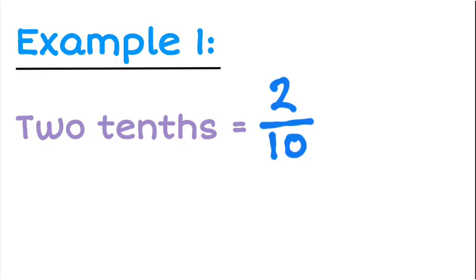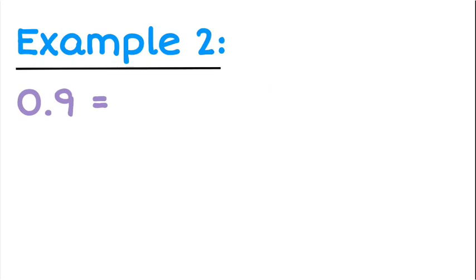If I wanted to write that as a decimal, what I need to remember is that when I'm dividing by ten, that's in my first value after the decimal point. So that first digit after the decimal is my tenths column, so I'm going to write that as 0.2.